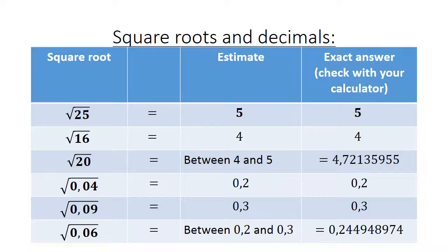Here we have square roots. We start with the square root of 25. If we estimate, it will be 5 and if you check with your calculator, it is exactly 5. Because we know 5 times 5 equals 25. Square root of 16 is equal to 4. Now we have the square root of 20. Because 20 is between 16 and 25, we can estimate and say it is between 4 and 5, and the exact answer is 4,72135955.